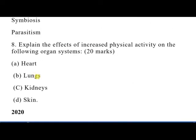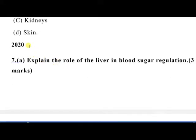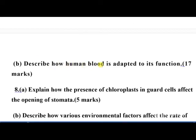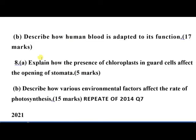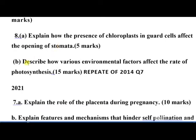The 2020 exam, sat in 2021, had question 7 part A: explain the role of the liver in blood sugar regulation — 5 marks. Part B: describe how human blood is adapted to its function — covering red blood cells, white blood cells, and their functions in the body. Question 8 was: explain how the presence of chloroplasts in guard cells affects the opening and closing of stomata. Part B: describe how various environmental factors affect the rate of photosynthesis — 15 marks.